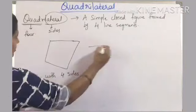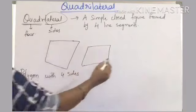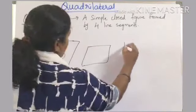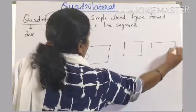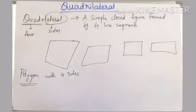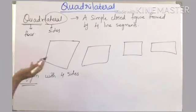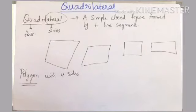There are so many shapes in the quadrilateral family. We can find the shape of a quadrilateral in various things around us, like in a chessboard, a deck of cards, a kite, etc.